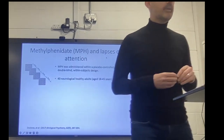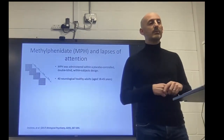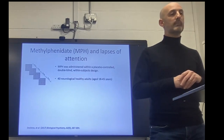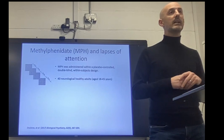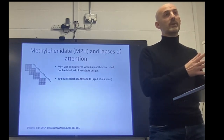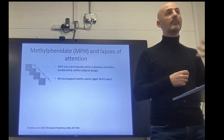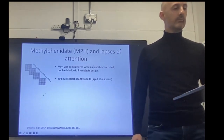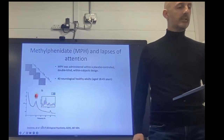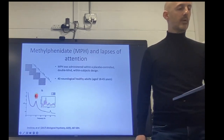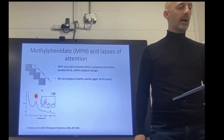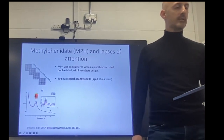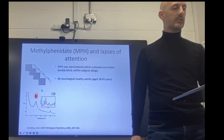We were interested in methylphenidate, also known as Ritalin, and how this would affect lapses of attention on the task. Previous work had focused on behavioral improvements in ADHD, often with resting-state EEG or fMRI. We were interested in how it would affect these EEG-sensitive markers. Using the CTET with 40 neurologically healthy adults, we found a selective suppression of the alpha signal. The variability of fluctuations in the alpha signal was also rendered less variable across the vast majority of participants.